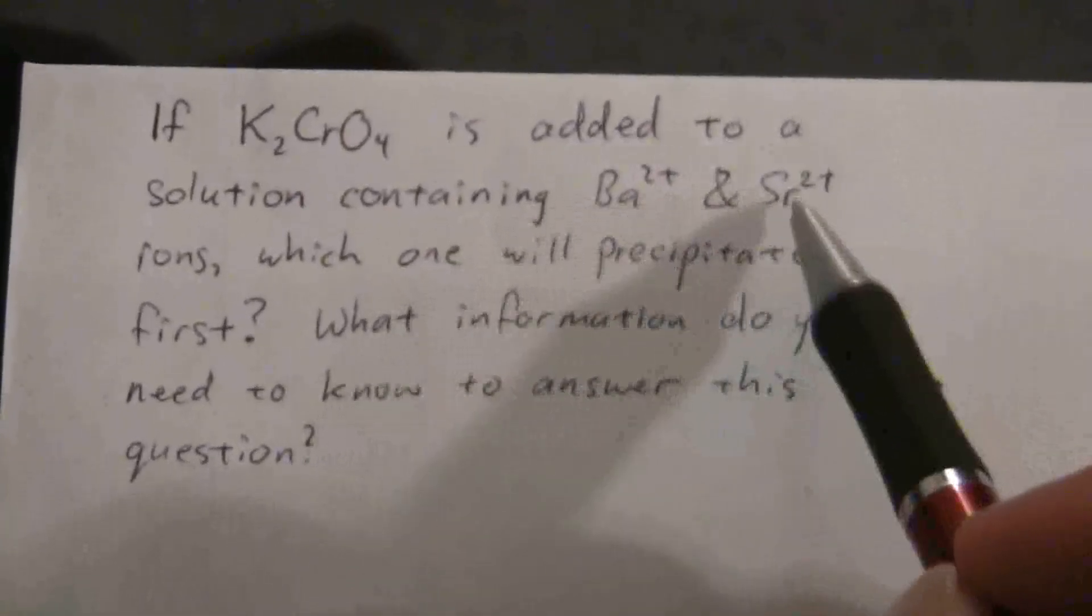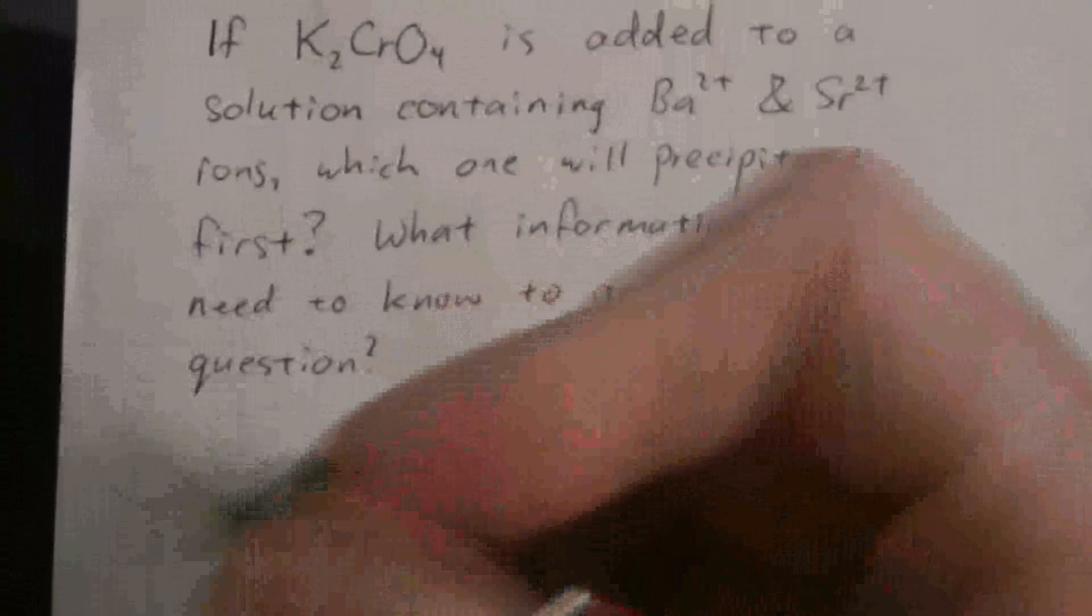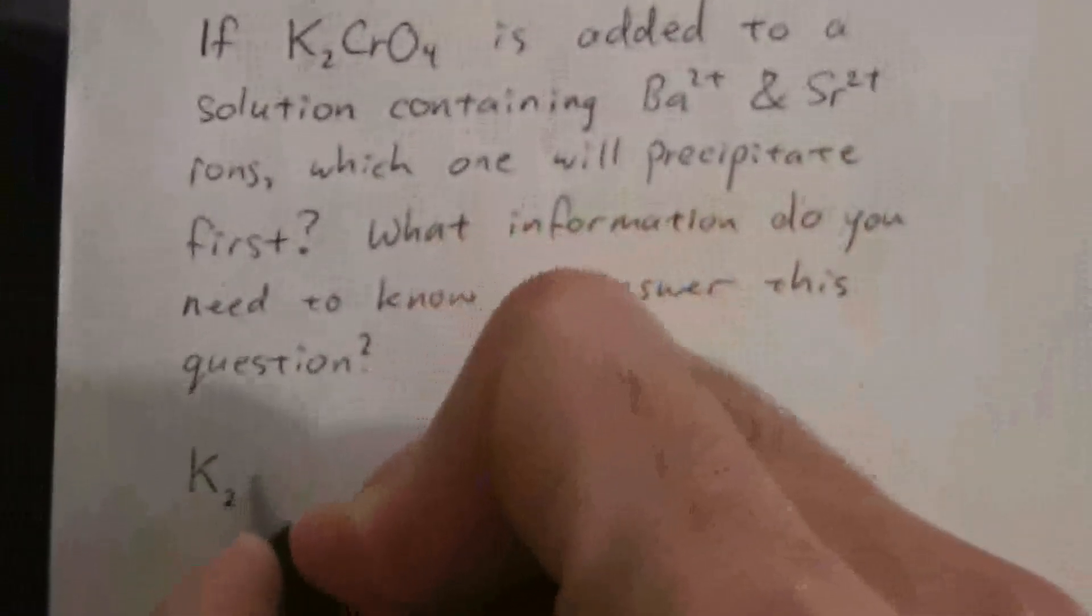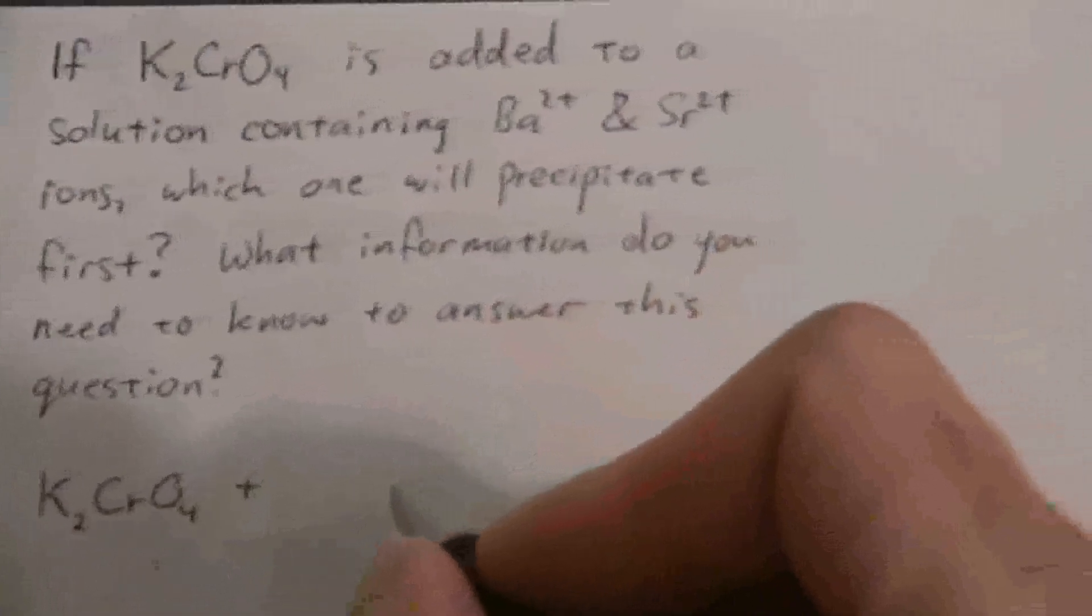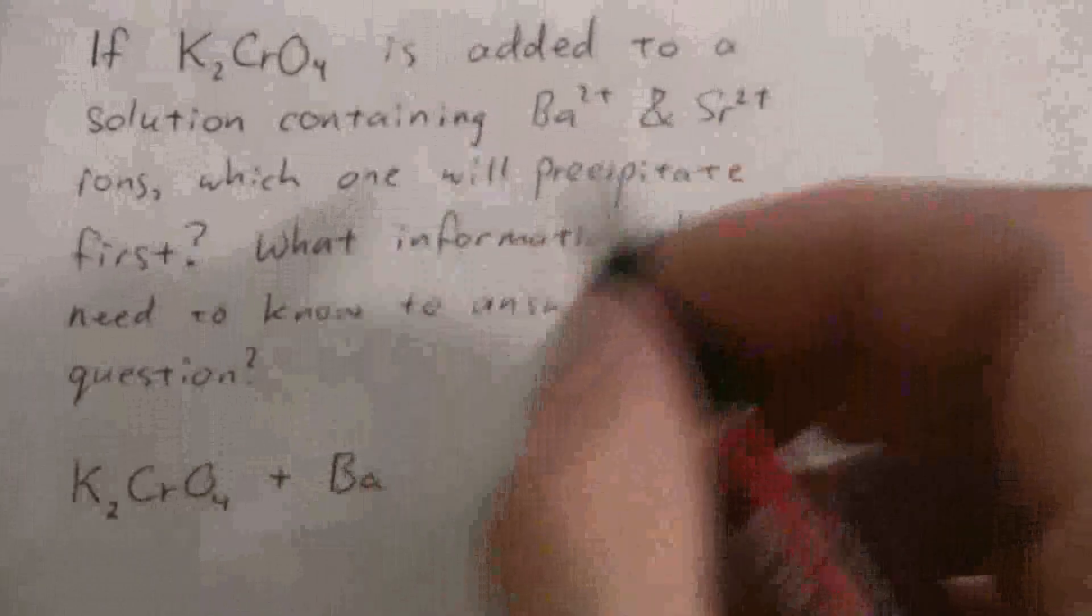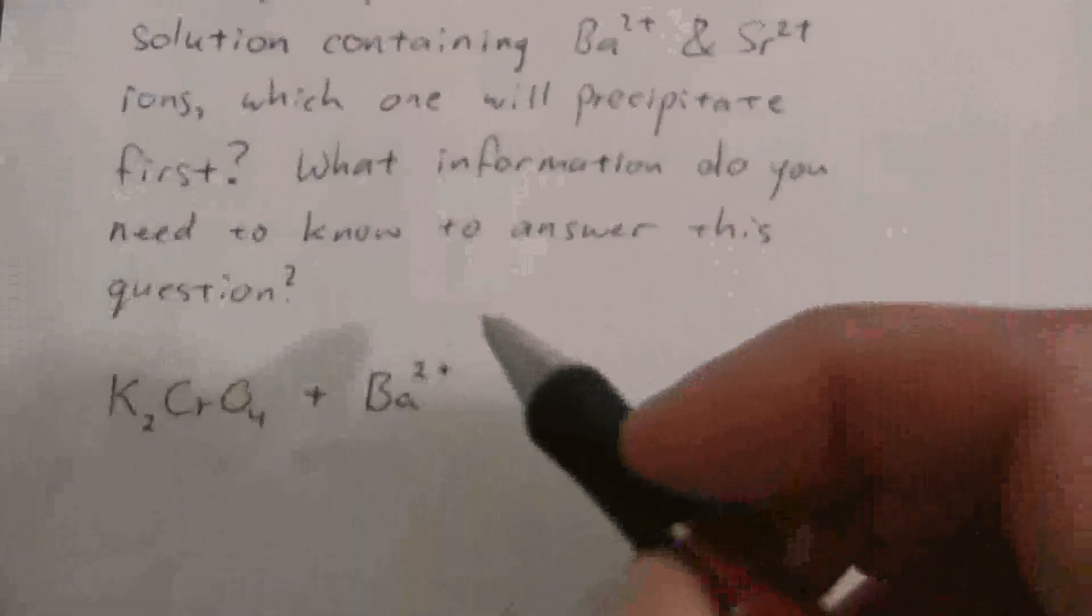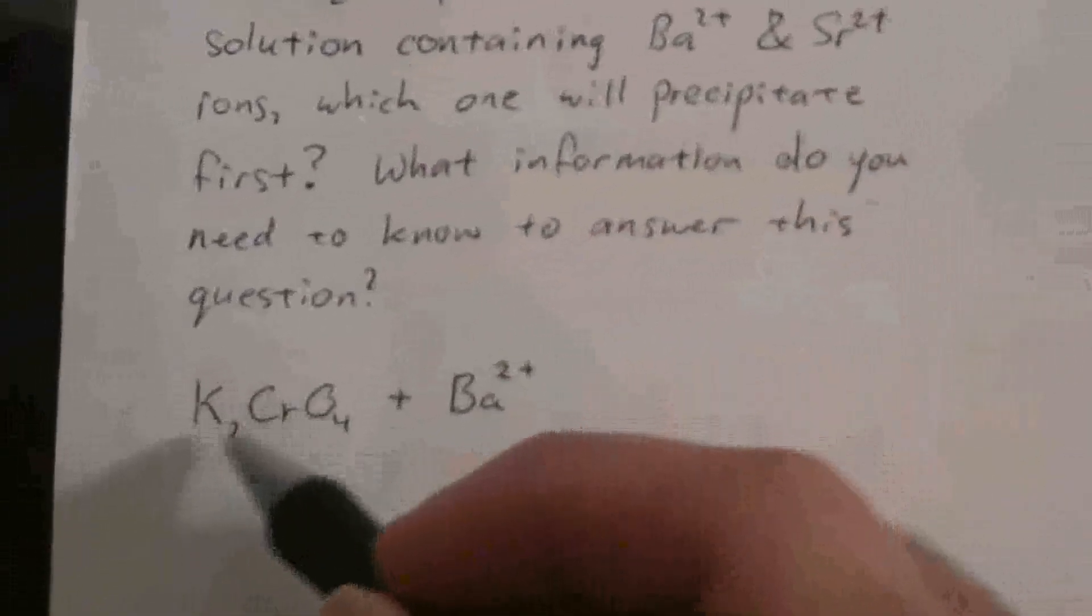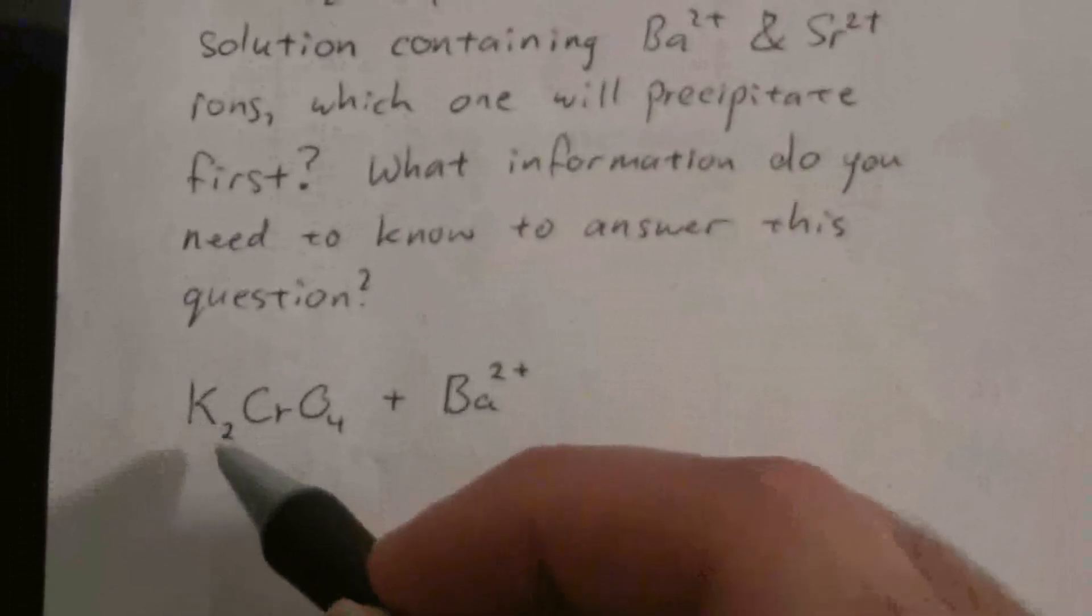Which one of these ions is going to precipitate first when we add potassium chromate? Just to give an understanding of what is happening here, we have our potassium chromate, and this would be an aqueous solution, plus some compound containing soluble barium ions so that the barium ions would be free in the solution. The potassium is a spectator ion, so it's not going to participate.